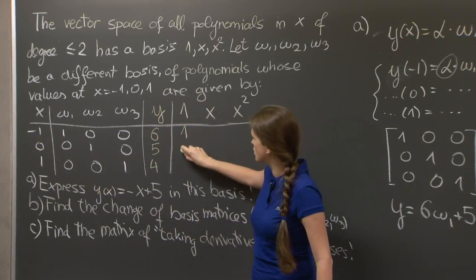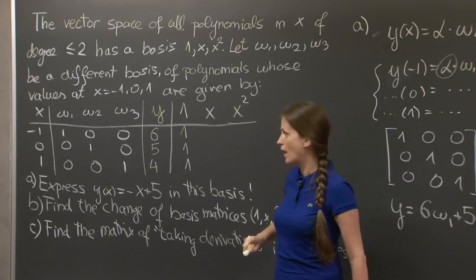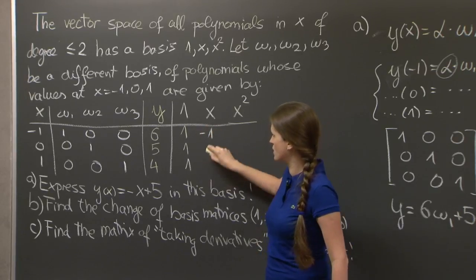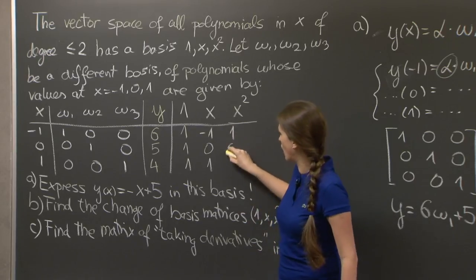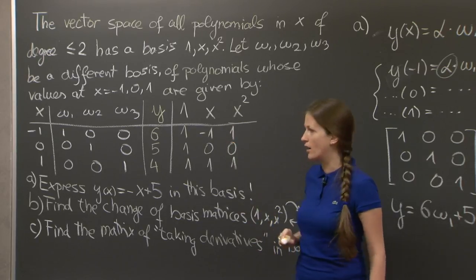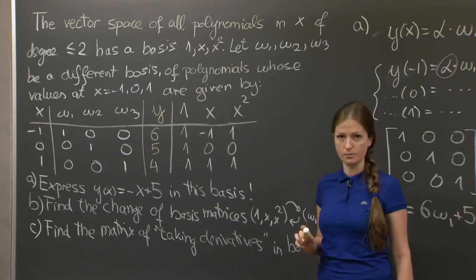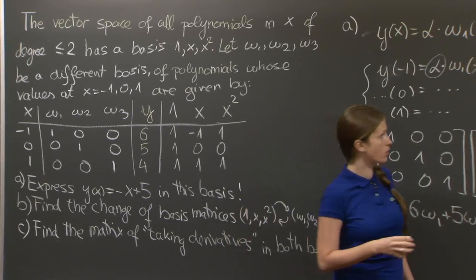So let's just find their values at these three points. 1 is a constant. It just takes value 1 everywhere. x takes value -1 at -1, 0 at 0, and 1 at 1. And x squared takes values 1, 0, and 1 at -1, 0, and 1.